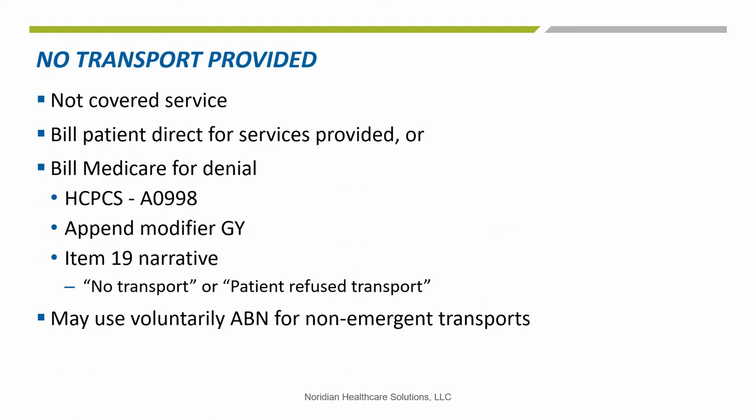Outside of the PHE, if you do not transport the patient, then you do not have a covered service under the Medicare program per CR 7489 dated January 2012. A claim doesn't need to be submitted to Medicare for non-covered or statutorily excluded services. However, if a patient requests you submit the non-covered A0998 for denial so that their secondary insurance may allow, go ahead and know it will be denied as patient responsibility. Ambulances have the choice: either bill the patient directly for a base rate without mileage, or bill with HCPCS A0998 appending the GY modifier and in item 19 narrative comments field state something like 'no transport' or 'patient refused transport.' The use of the Advanced Beneficiary Notice is not needed, but this ABN form can be used voluntarily as a means of outlining a patient's financial liability, but only for non-emergent transports. Patients can never be asked to sign under duress or in an emergency.